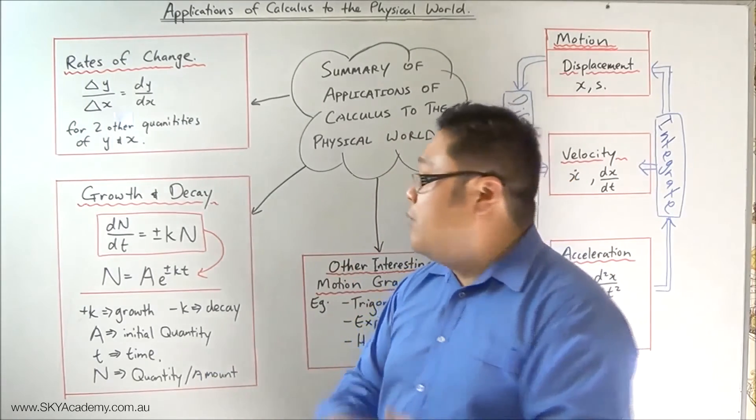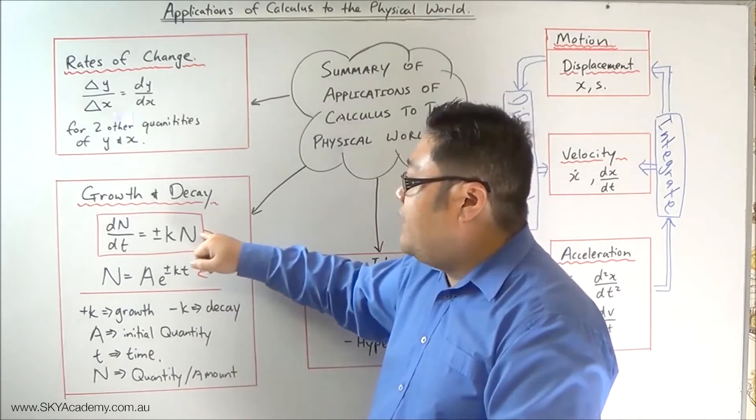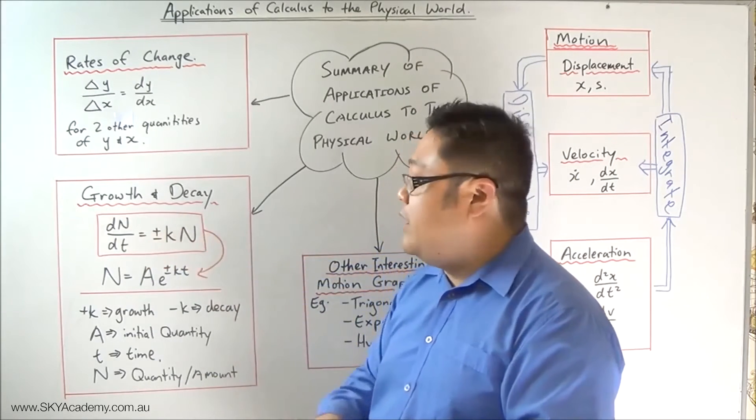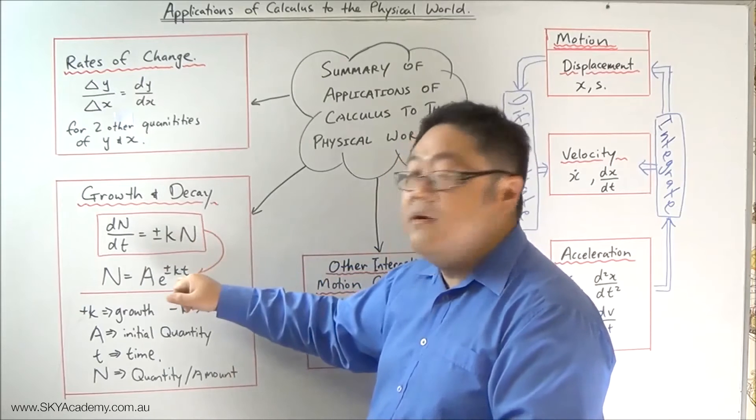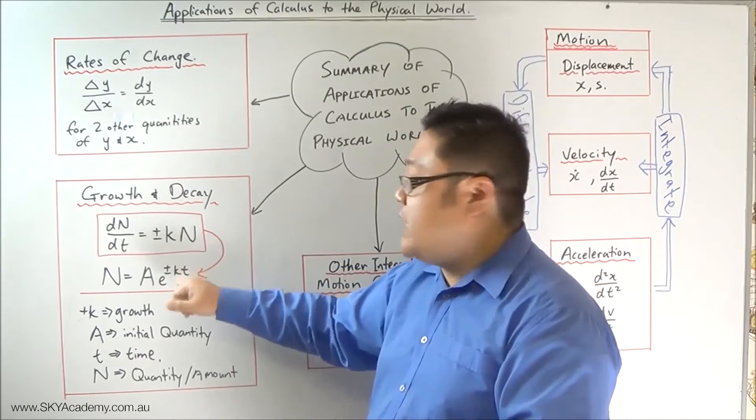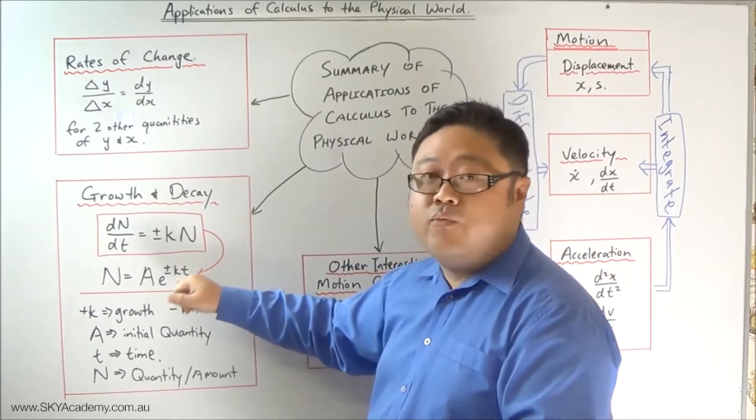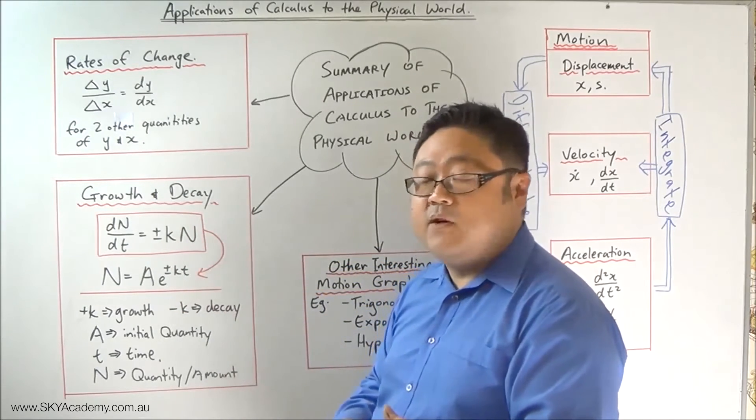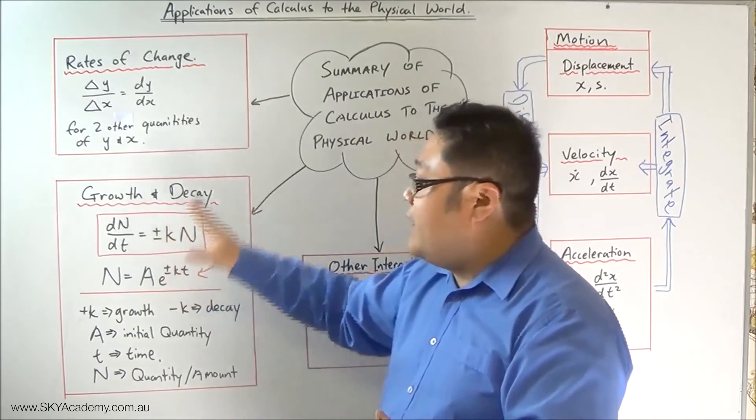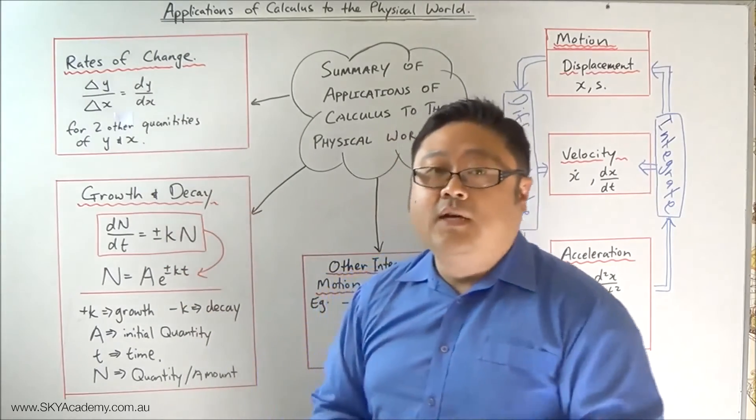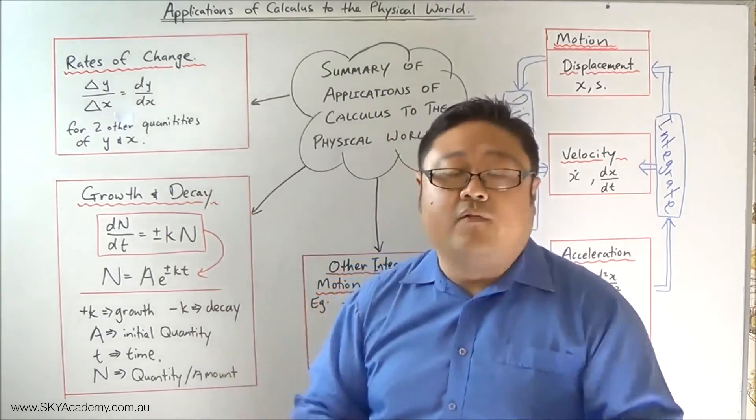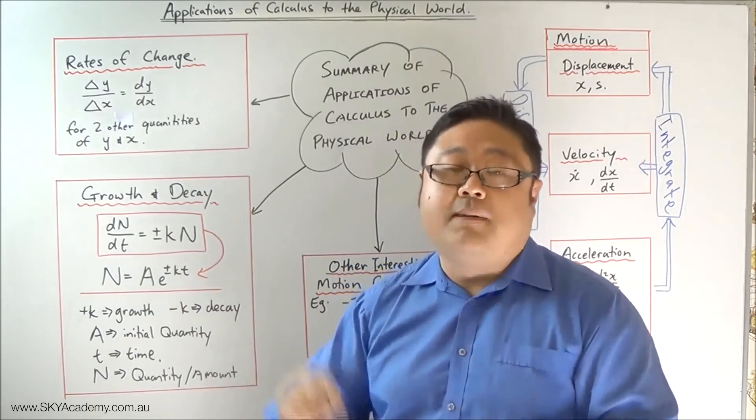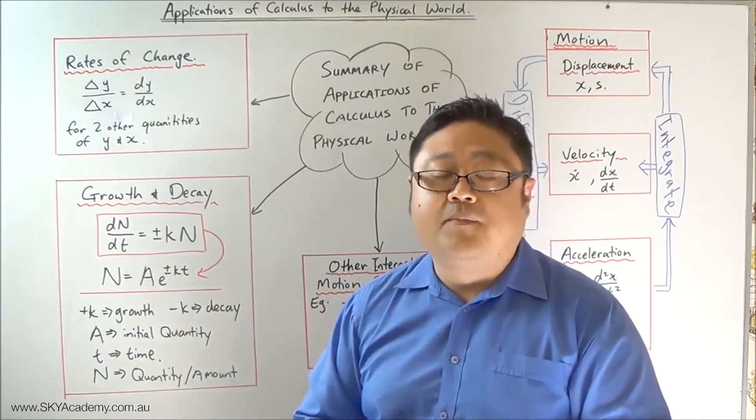And what we got to see is that when you're given a rate of change that's proportional to the quantity, you can immediately go to the exponential rule that allows us to get the derivative and vice versa. So we got to look at growth and decay and do two typical examples of questions that might be asked on growth and decay.